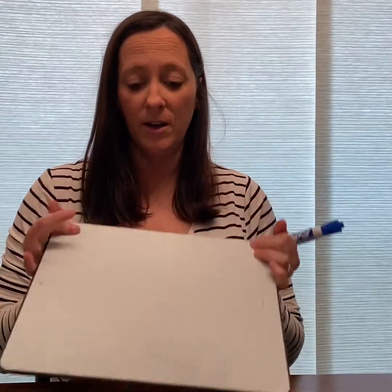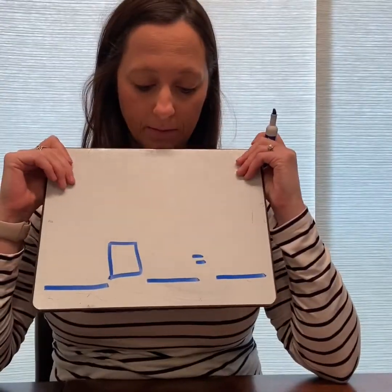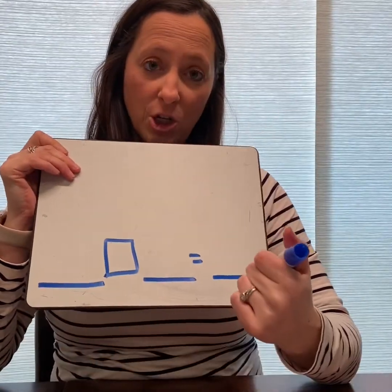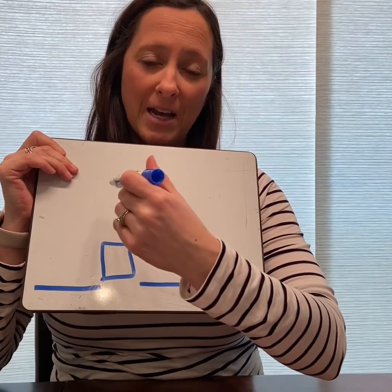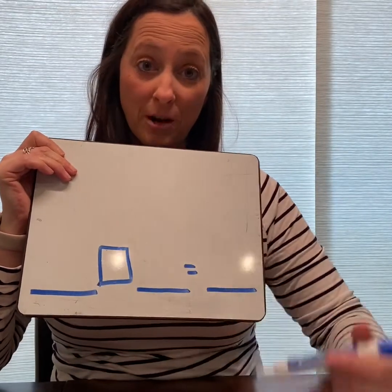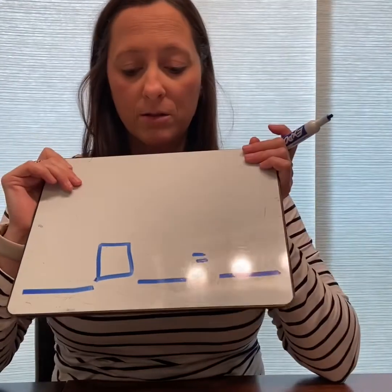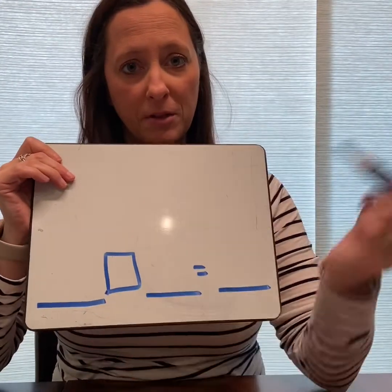Now we'll move into our story problem section about Alasia. Because I was able to stop at school and get supplies, I have a whiteboard, but you guys can use paper to draw your story problem and your equation. I'm going to start with my equation line ready on the bottom — go ahead and draw that too, so as we draw the story problem on top you can write in your numbers.